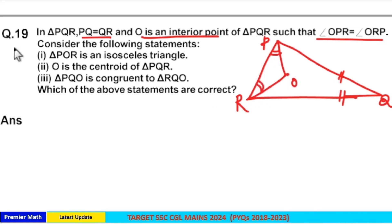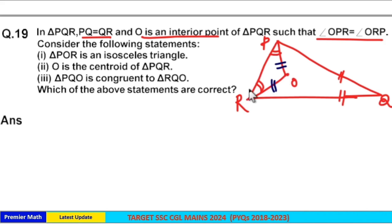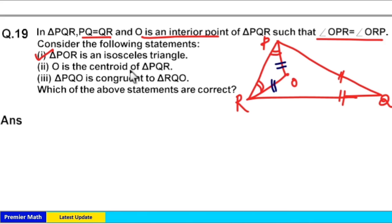Since these two angles are equal, the two opposite sides are equal in triangle POR, which means triangle POR is an isosceles triangle. So statement one is correct. Statement two says O is always the centroid of triangle PQR.